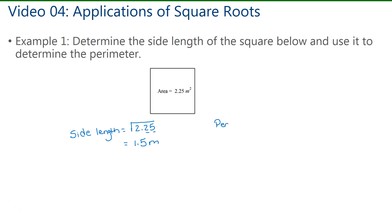Now the perimeter can be found by adding up all four sides, or in this case, since it's a square, I can just multiply the side length by 4. So 4 times 1.5. I'll multiply 5 times 4, which is 20. So 4 times 1 plus 2 gives me 6. Adding up all my decimal places, I see that this has one decimal place, so my answer is going to have 1 as well. That makes the perimeter equal to 6.0 meters.